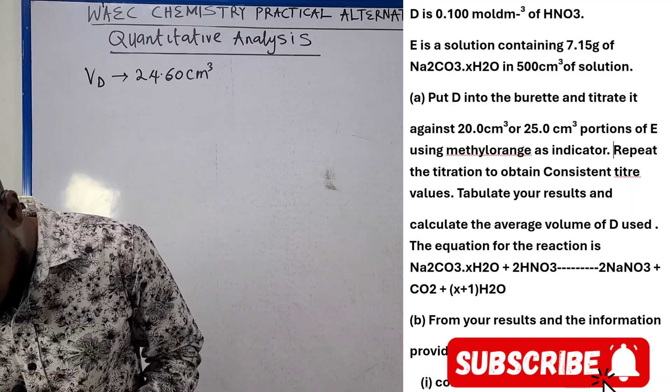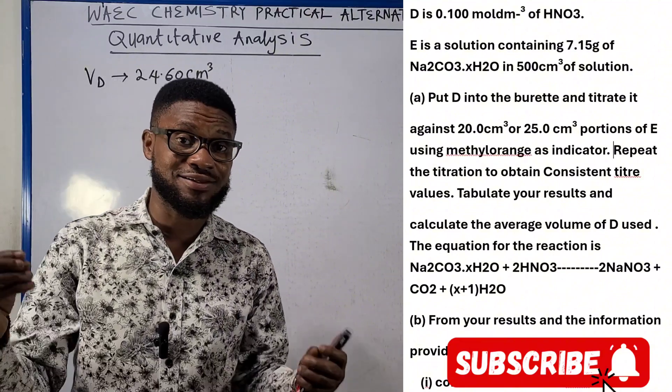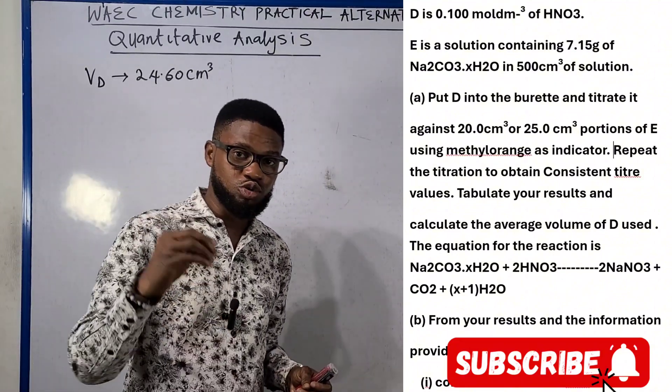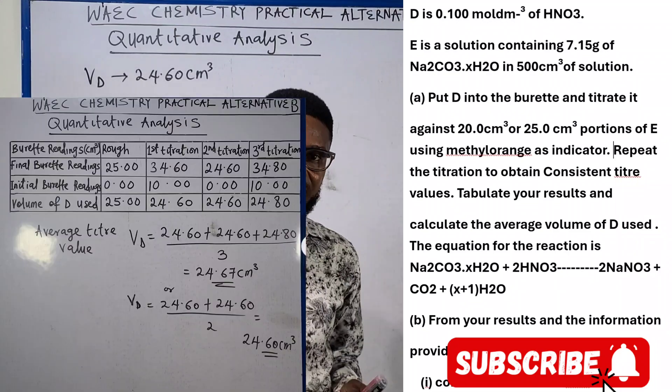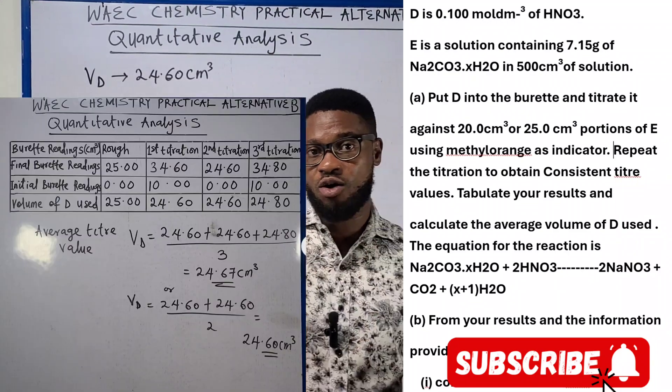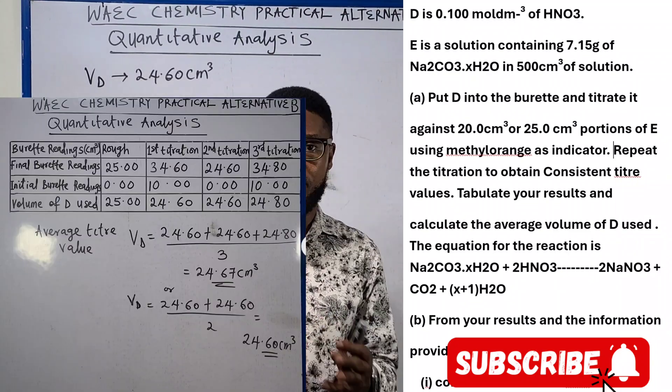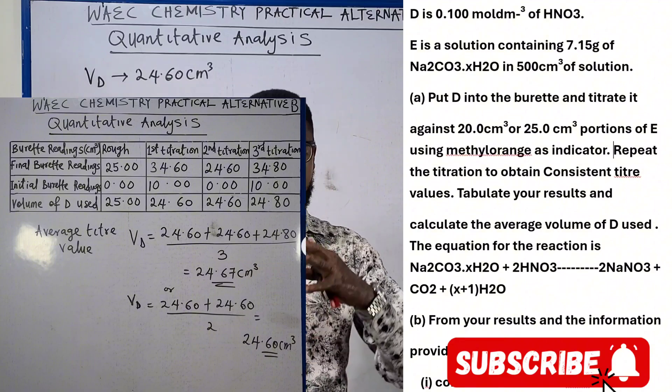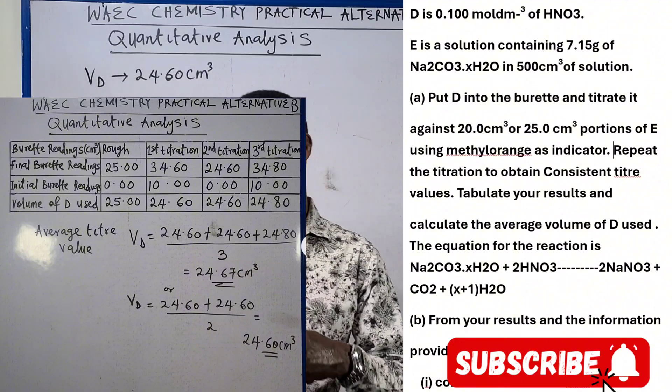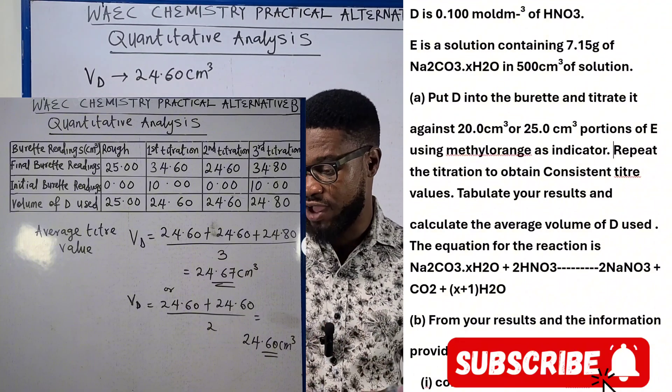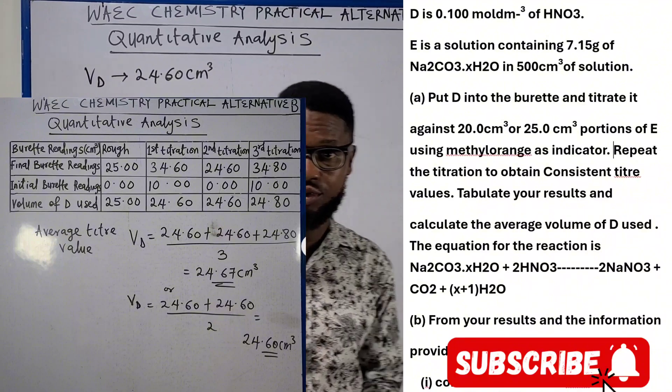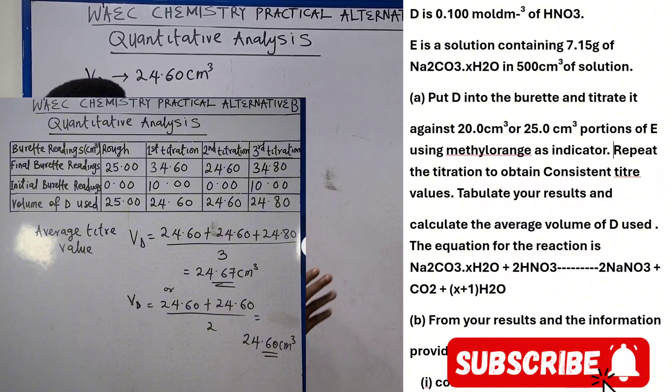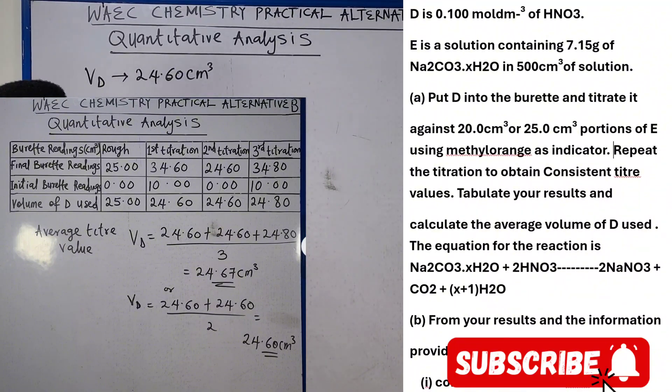After all of the titration, tabulate your result and calculate the average volume of acid used. That is why it is very imperative for you to check the description of this video for the link on the lecture video about how you prepare your table and what our average titre value is.